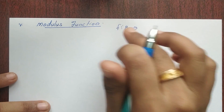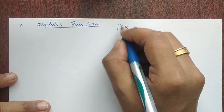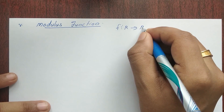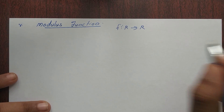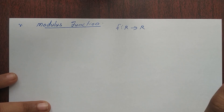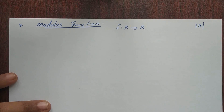Hi everyone. Now we are going to learn the function of the graph. Now we are going to learn the modulus function. Now we are going to define the function. Modulus function is defined from R to R. This is the real number. Modulus function is defined as modulus of x.